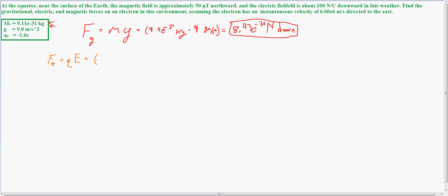The charge of the electron, which is negative 1.6 coulombs, times negative 100 newtons per coulomb. I entered the negative here because it's directed downwards.